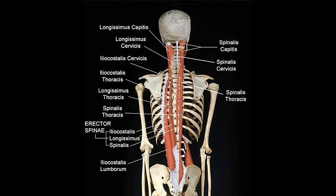Longissimus thoracis: it arises from the sacrum and medial iliac crest through the iliocostalis lumborum tendon and lumbosacral aponeurosis, and the transverse and spinous processes of vertebrae of the lumbar region. It inserts in the transverse processes of the thoracic vertebrae. It helps in extending the thoracic region, or the lower vertebral column.